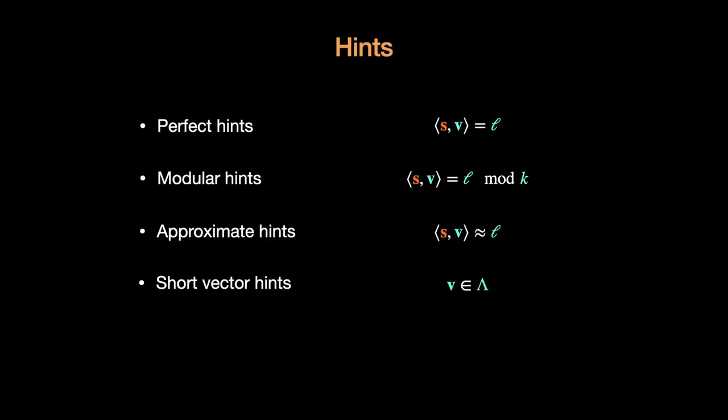Next, I'm going to show four types of hints formalized in our framework. For the perfect hints, the attacker is given a vector v and knows the inner product of the secret vector and v. Modular hints have a similar form. Here, attacker knows the inner product modulo an integer, and the integer is known. In approximate hints, attacker is able to learn the noisy version of the inner product. The last type of hint is a bit special. Here, attacker does not know the linear relation of the vector secret, but knows some other information about the lattice. During this talk, I will be focusing on illustrating first three types of hints.